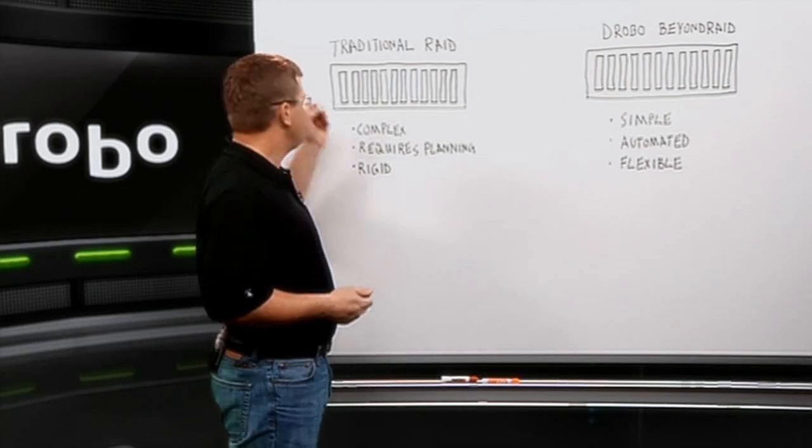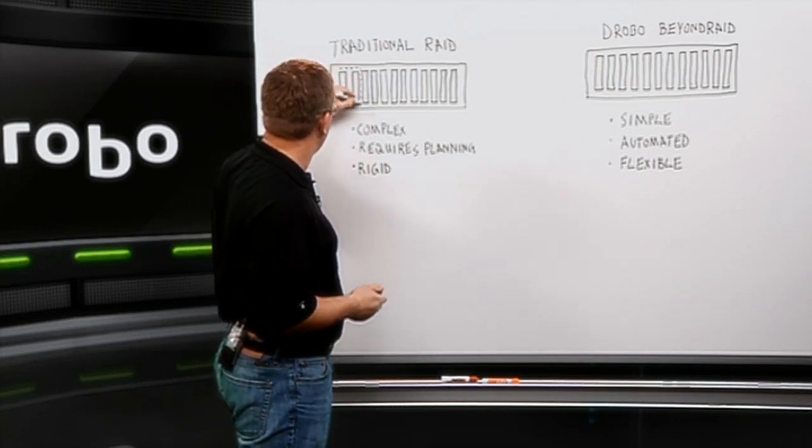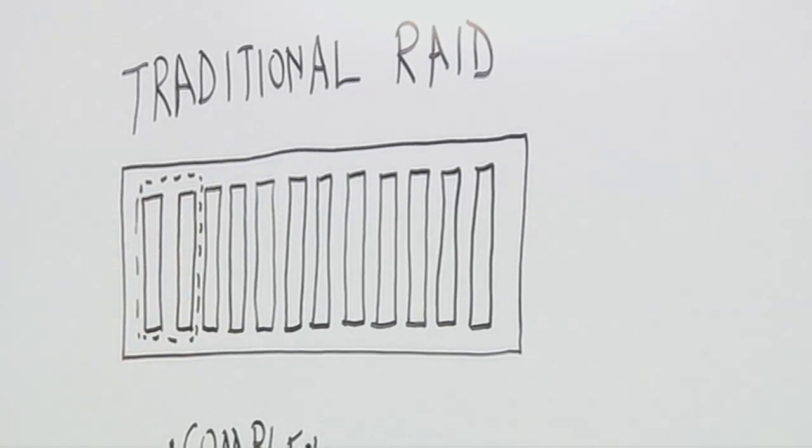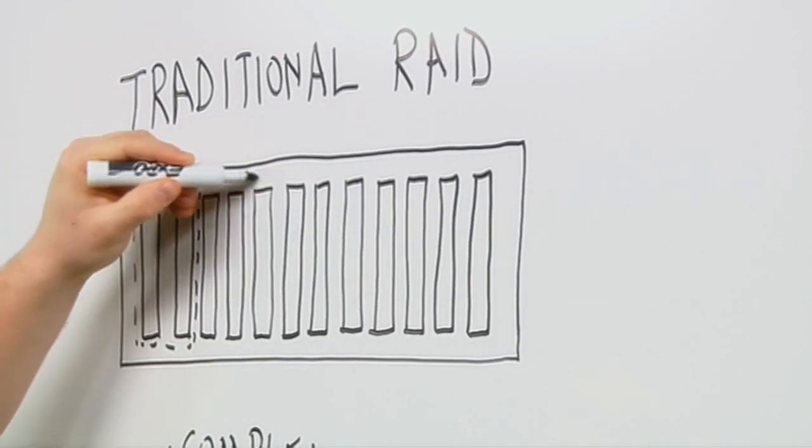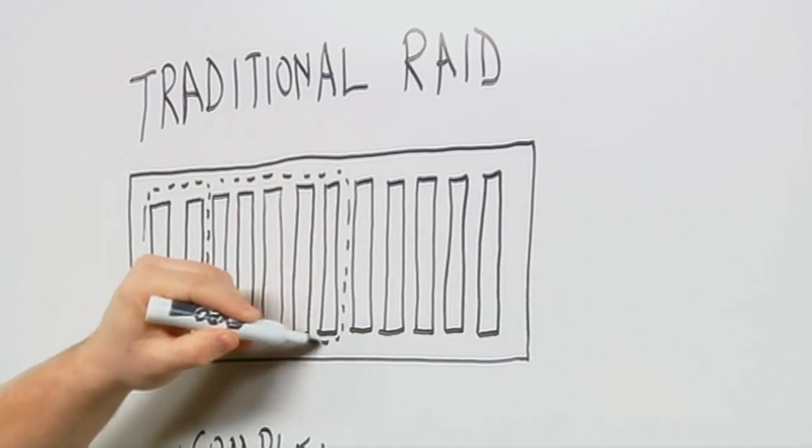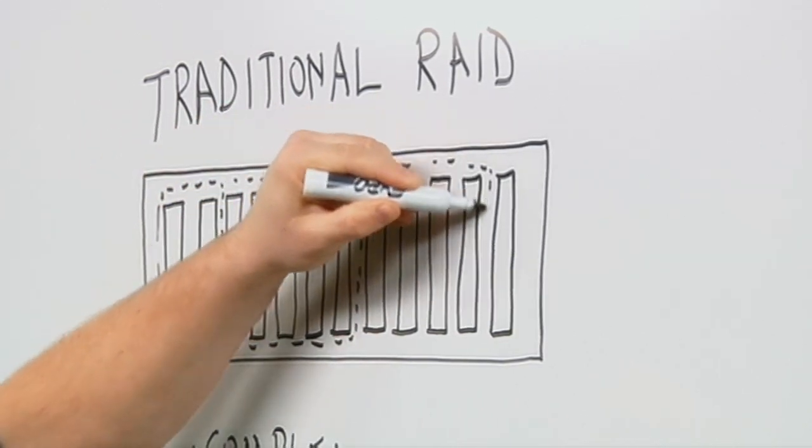So for example, you may have an application that may want a mirror for high performance. It will use these first two drives. And then you may want higher capacity but still protection, so you may do a raid 5 group here, and then another raid 5 group here.